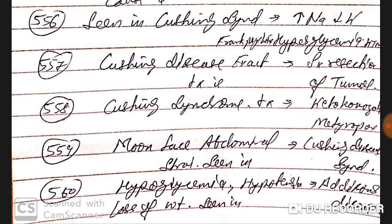The exact treatment for Cushing disease is surgical resection. For Cushing syndrome, treatment is by ketoconazole or metyrapone. Moon face and abdominal striae are seen in both Cushing syndrome and Cushing disease.